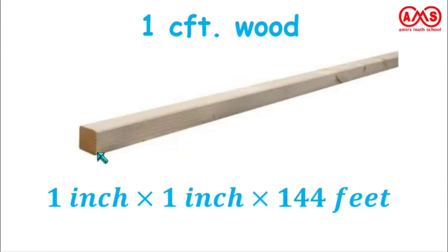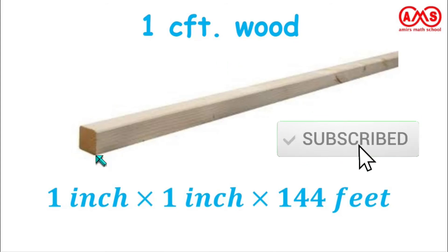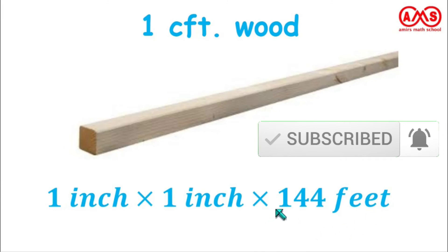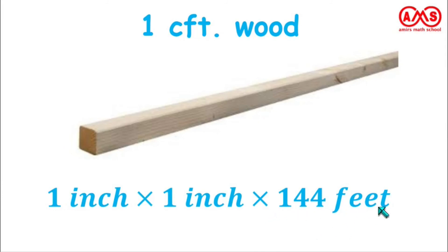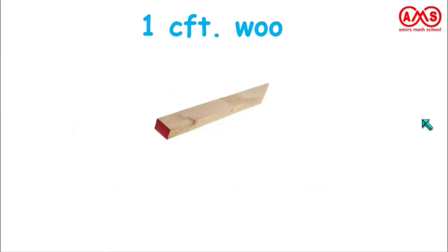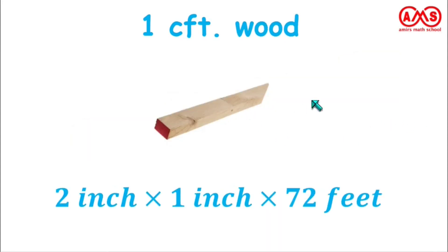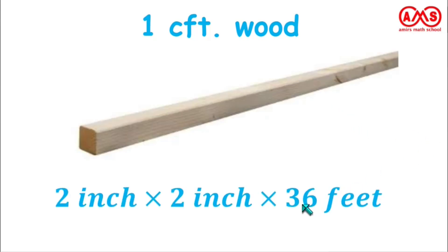If we have 1 inch by 1 inch wood, the length should be 144 feet to equal 1 CFT. For 2 by 1 inch wood, the length should be 72 feet to get 1 CFT. For 2 by 2 inch wood, the length should be 36 feet for the measurement to be 1 CFT.